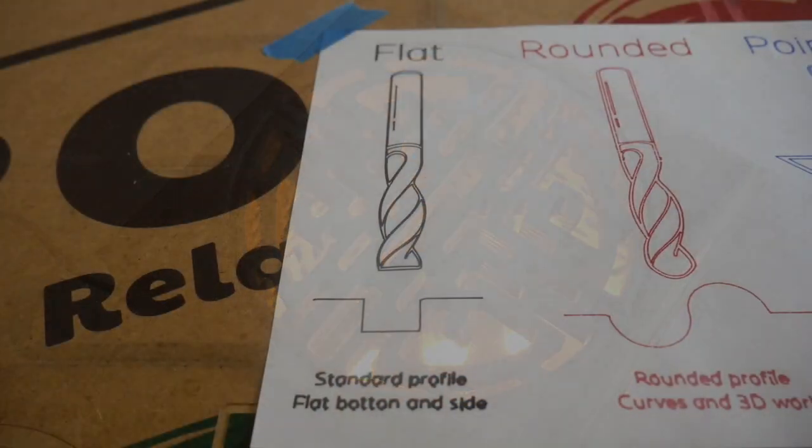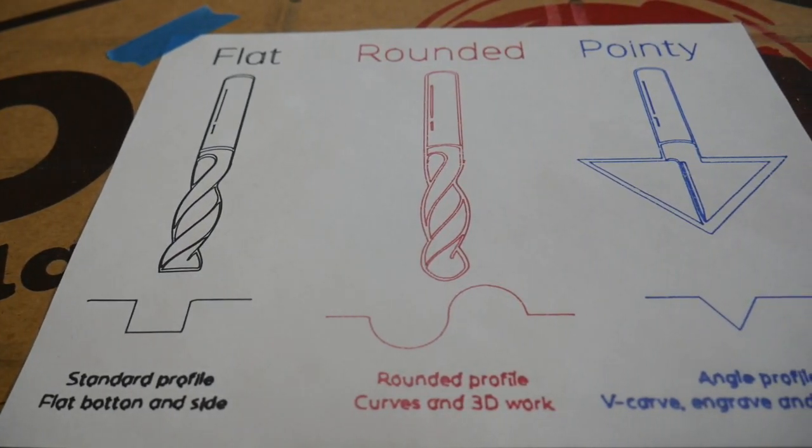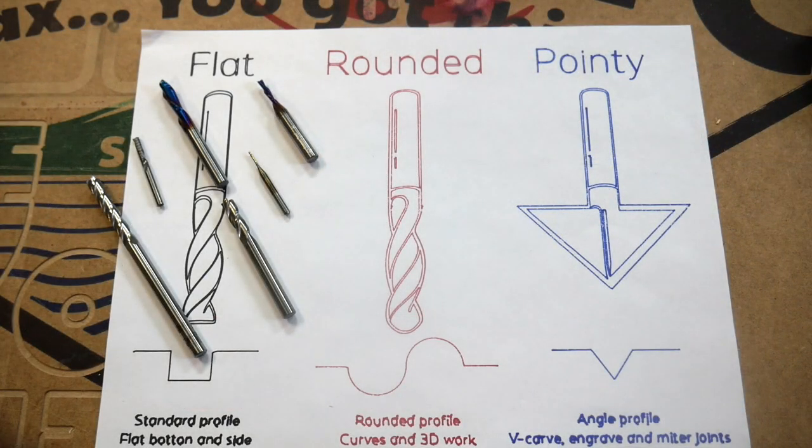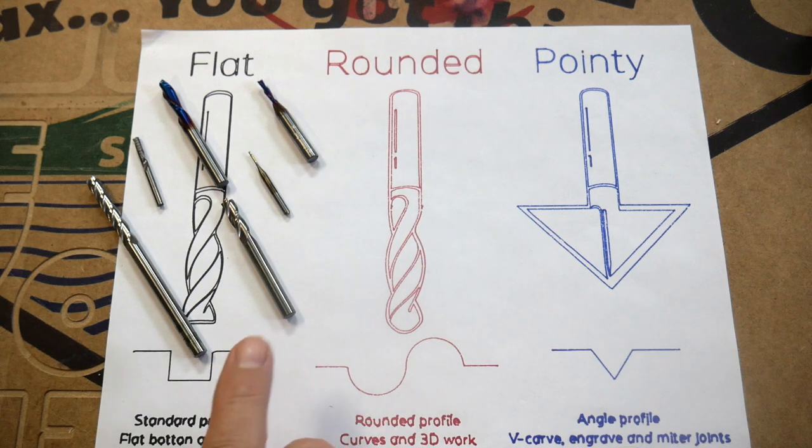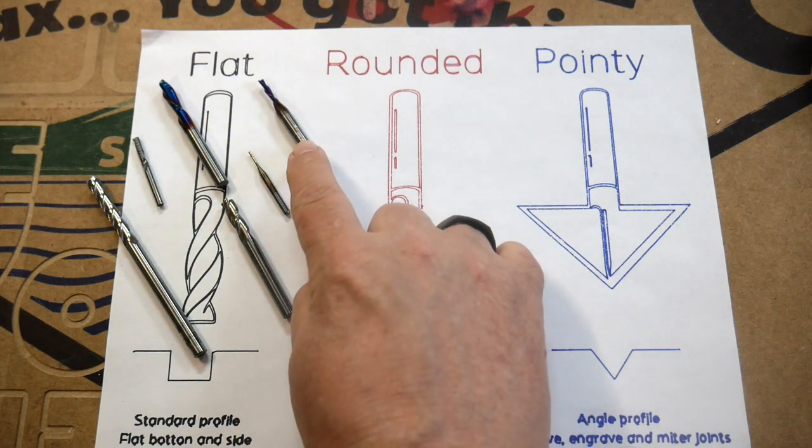So let's take a closer look at each of these three categories of bits and take a look at a couple of examples so we can see exactly what we're talking about. Your flat head bits come in a wide variety of sizes, and these are probably going to be what you use for most things. You'll notice here I've got an eighth inch bit.